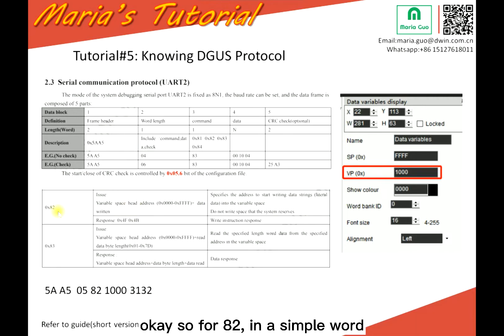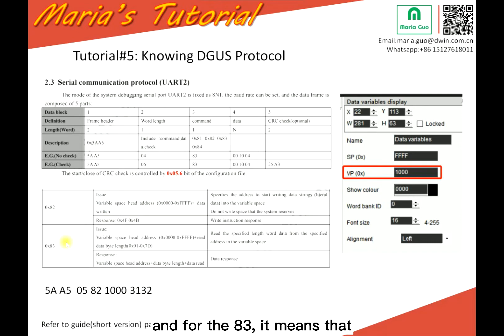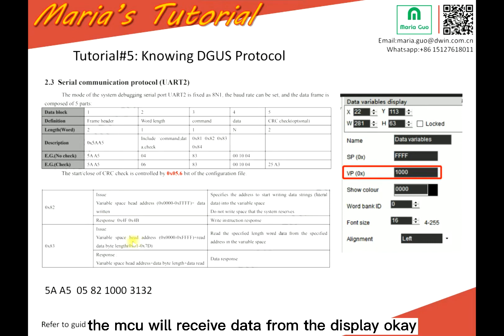So for 0x82 in simple words, it means the MCU will send data to the display. And for 0x83, it means that the MCU will receive data from the display.